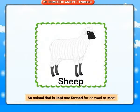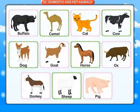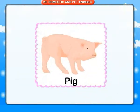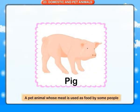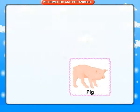Sheep: an animal that is kept and farmed for its wool or meat. Pig: a pet animal whose meat is used as food by some people.